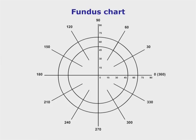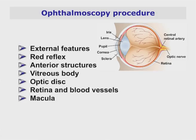Record your findings and then repeat your examination on the other eye. A more accurate method of recording the location of any lesion is using a fundus chart, with the optic disc depicted at the centre of the chart. If you locate an abnormality, continue looking for any others. To memorize the examination, adopt a logical routine which begins from the external features of the eyes, then the red reflex, the anterior structures, the vitreous body, the optic disc, the retina and blood vessels, and lastly the macula.